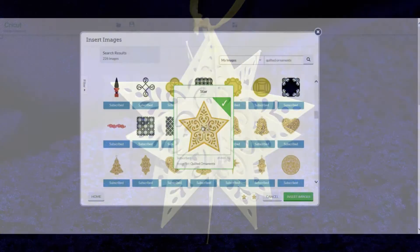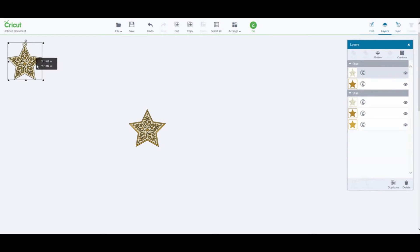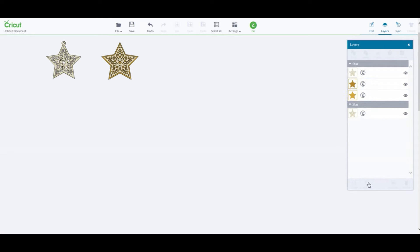In the Cricut design space I have inserted two of the stars from the quilted ornaments cartridge. Because these stars have layers I have ungrouped the layers and only kept the top layer of both the stars.